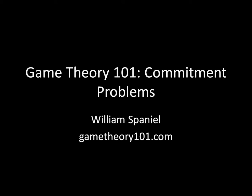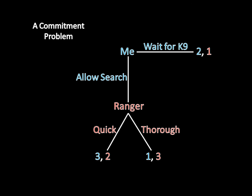So that was the situation I was in, and rather than taking it at face value, I put on my game theory hat and started thinking about what I should do given my constraints. It's very important in a strategic situation to understand what the strategic situation is — ideally, to think about it as a game tree. I have two choices: I can wait for the canine unit to arrive, or I can allow a search to happen. If I allow a search, the ranger can do one of two things: he can make a quick search, as he said, or, once he has my permission, he can actually conduct a thorough search, and there's really nothing I can do legally about that.